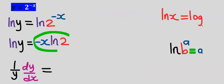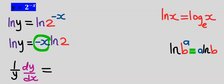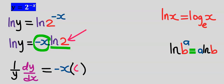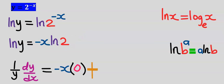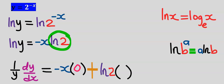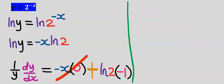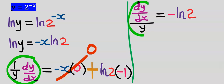Next, we apply the product rule. First, keep minus x constant and differentiate the natural log of 2 — differentiating a constant gives 0. Then, introduce a plus sign according to the product rule, keep the natural log of 2 constant, and differentiate minus x, which gives minus 1. Everything involving the zero term becomes 0.